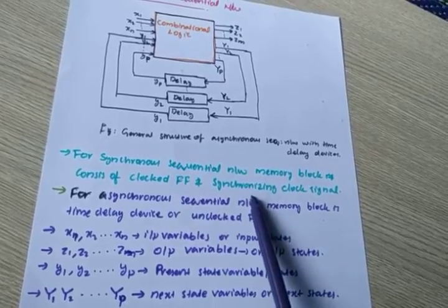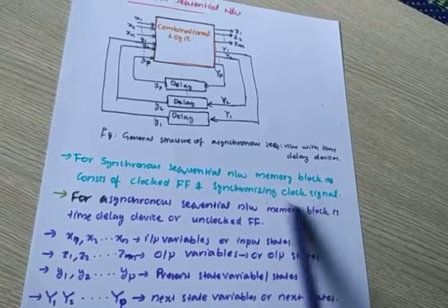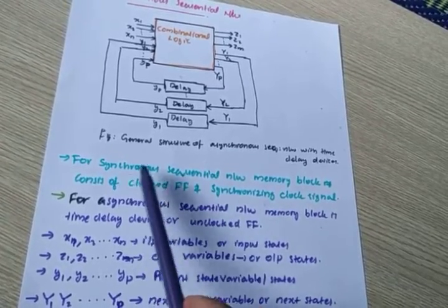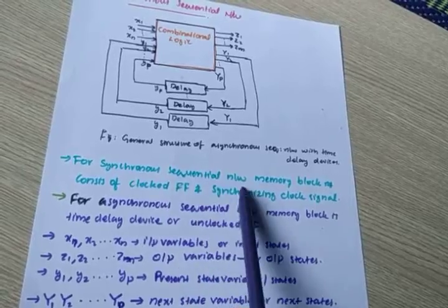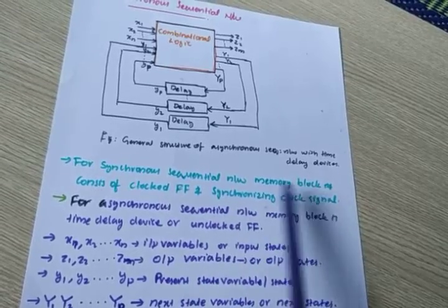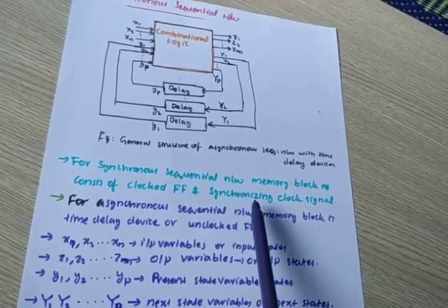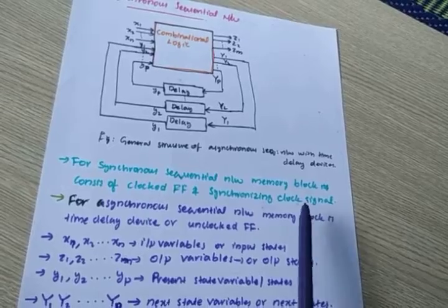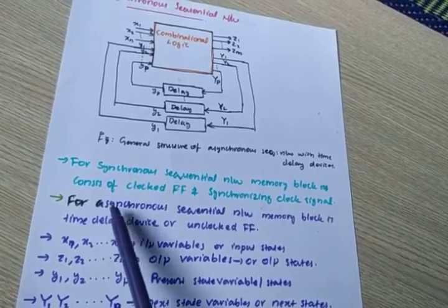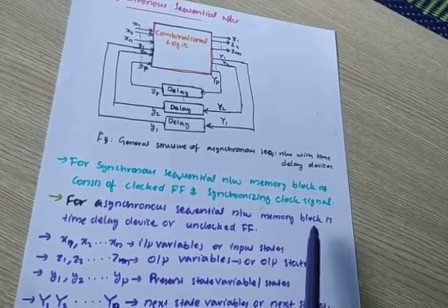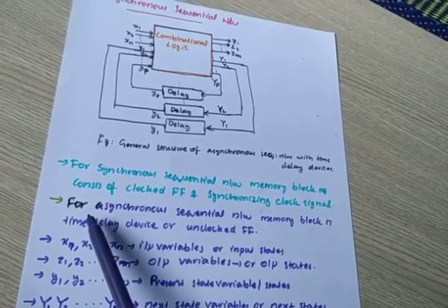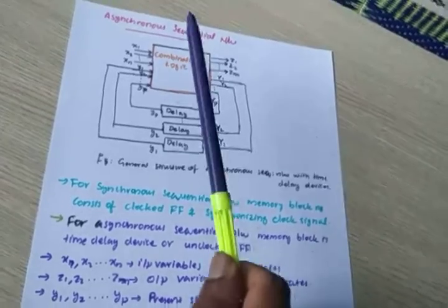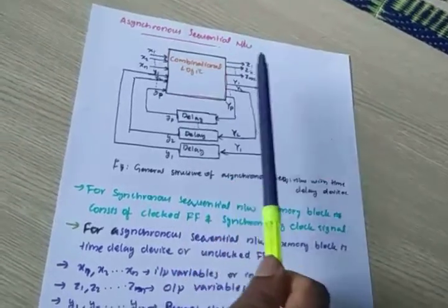For Synchronous Sequential Circuits, the memory block consists of clocked flip-flops with a synchronizing clock signal. But for Asynchronous Sequential Networks, the memory block is a time delay device or an unclocked flip-flop.